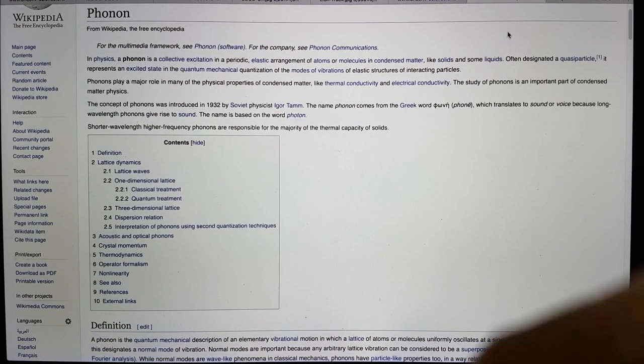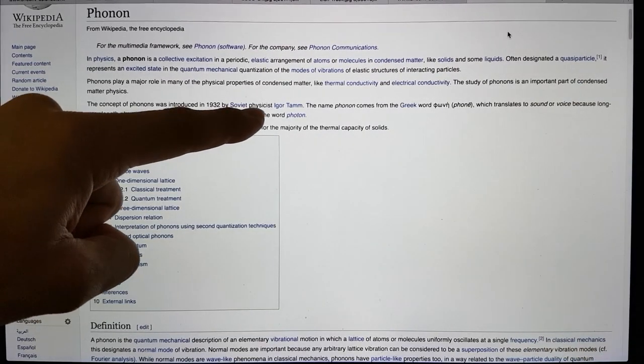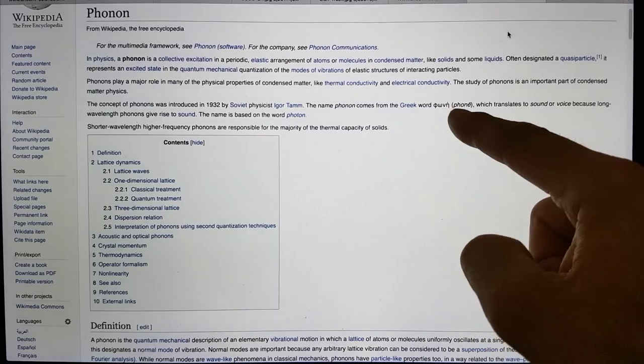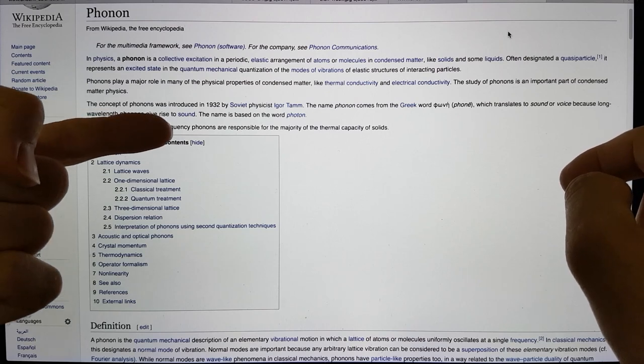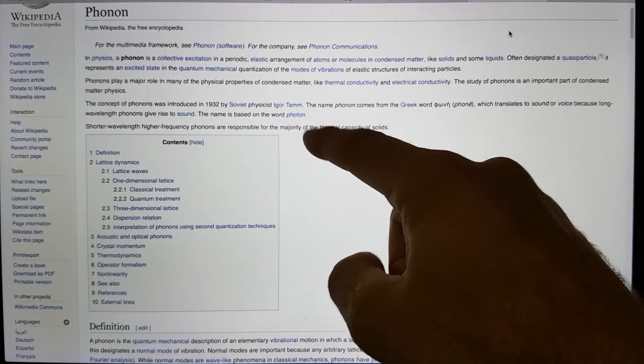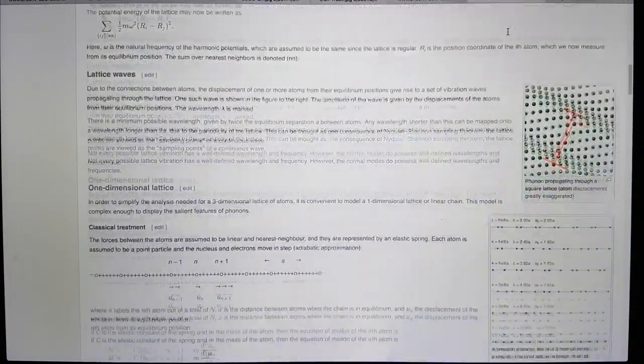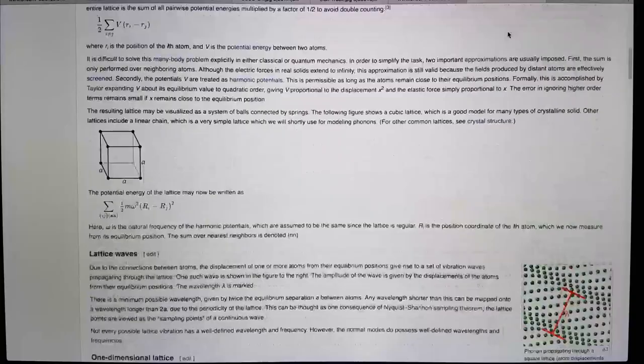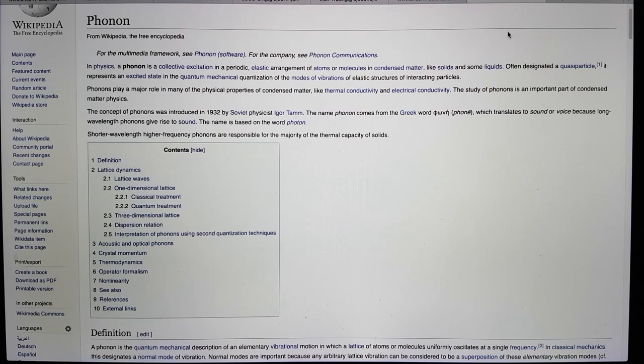What is a phonon? Looking at Wikipedia, the phonon is essentially, the concept of phonons was introduced in 1932 by Soviet physicist Igor Tam. The name phonon comes from the Greek word phone, which translates to sound or voice, because long wavelength phonons give rise to sound. When you look at this, it's basically vibration in the lattice.